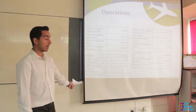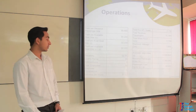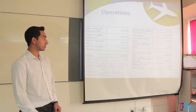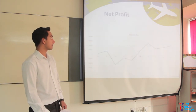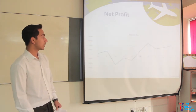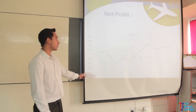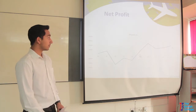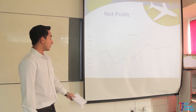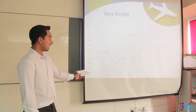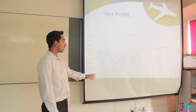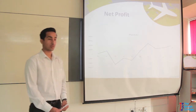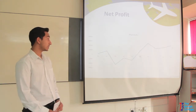We have a great earnings per share ratio of $1.33. Here we can see our net profit throughout the quarters. As we can see, in the first quarter we did not perform as well as we expected.